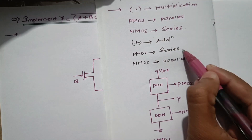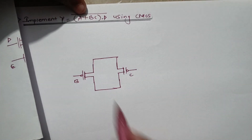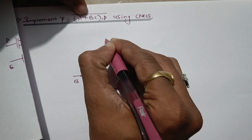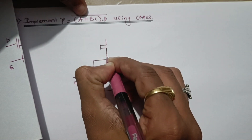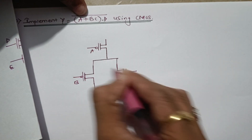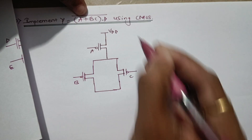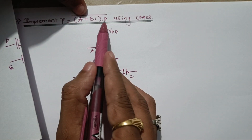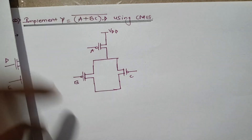Now BC is in addition with A, so for the plus sign, PMOS is connected in series. Here A will be in series with BC. Let's draw a transistor with input A in series with BC, and we'll assign VDD to the top.